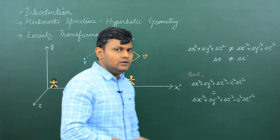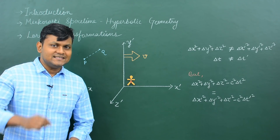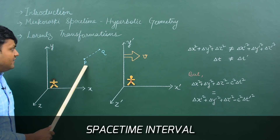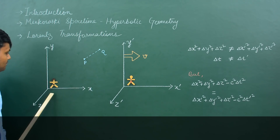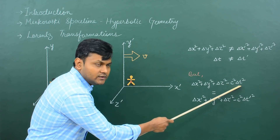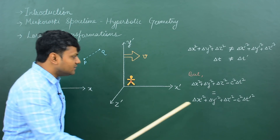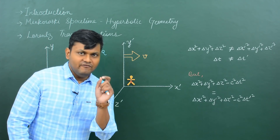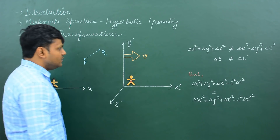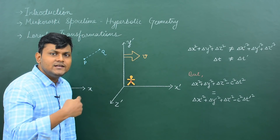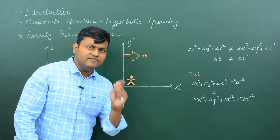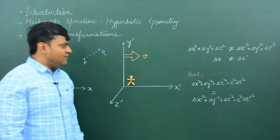However, there is a particular quantity which is the same for both observers — the space-time interval. If both Batman and Superman measure the quantity Δx² + Δy² + Δz² − c²Δt² for two different events, they get exactly the same result. This is known as invariance — this quantity is invariant under a Lorentz transformation, because the measurements of Batman and Superman are connected to each other by the Lorentz transformations. This quantity is therefore very important and is given the name space-time interval.